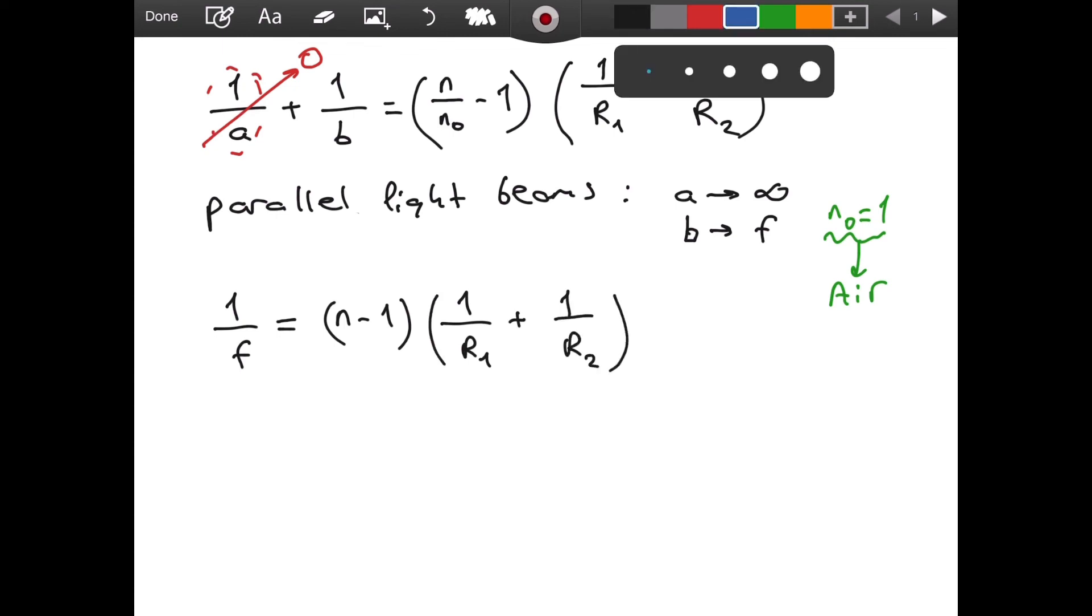And notice, we are done, because if we have a desired focal length, and if we know the material that we're working with, so we know the refractive index n value, then we can choose the radiuses of curvature accordingly, so that we get the desired outcome. As I said, this is called the lens makers equation.